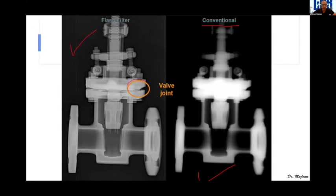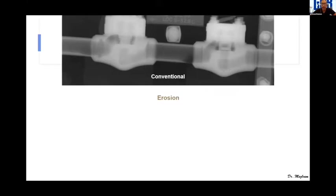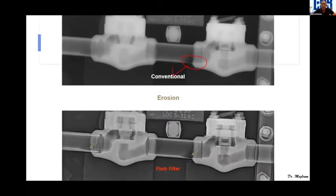For a valve inspection: in conventional CR or DR, the image might be accepted. But applying Flash Filter reveals a crack that is clearly visible and should be rejected. Similarly, a potential inclusion that requires high experience to detect in the raw image becomes clearly identifiable after Flash Filter, and the defect should be rejected or at least further evaluated.